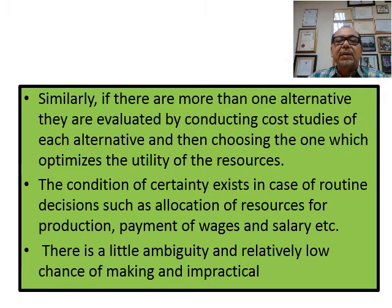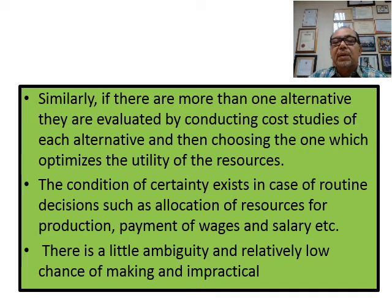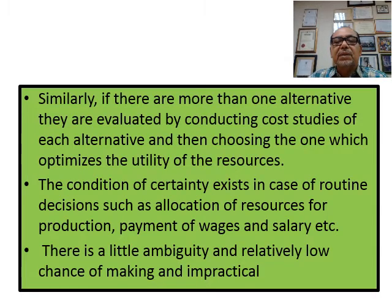If there are more than one alternative — for example, if you can't get material from America but can get it from another country — you can evaluate by conducting a cost study and due diligence before choosing. The condition of certainty exists in routine decisions such as allocation of resources for production, payment of wages and salaries — these are fixed costs and not much of an issue since the cost is already set.